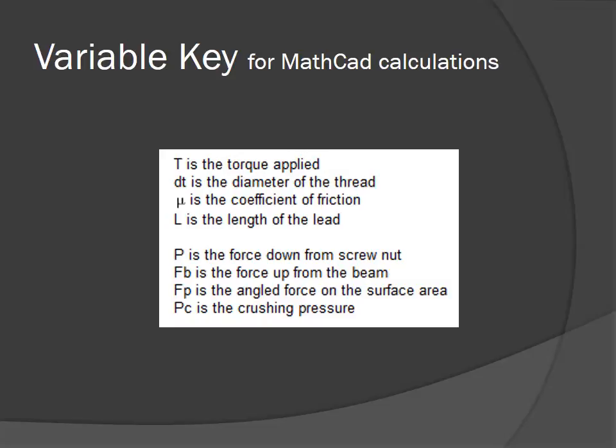P is the force down from the screw, FB is the force up on the beam, FP is the angled force on the surface area, and PC is the crushing pressure.